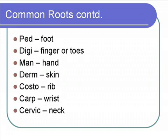'Derm' means skin. An example is epidermis — the outer top layer of your skin that's visible. 'Costo' means rib; you can have intercostal muscles, which are located in between your ribs. 'Carp' means wrist — people who type all day often suffer from carpal tunnel syndrome, a problem within their wrists. The last one on this slide is 'cervic,' meaning neck. An example would be your cervical vertebrae — the vertebrae within your neck.